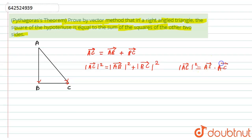So from this point I can say that mod of AC vector bracket squared is nothing but AB vector plus BC vector dot AB vector plus BC vector. Now I will apply here the formula A plus B times A plus B.